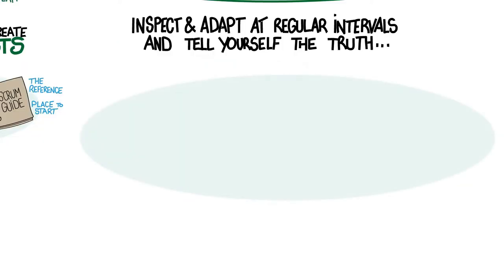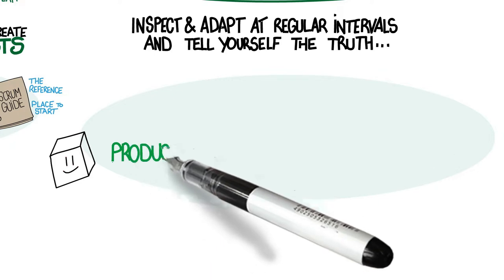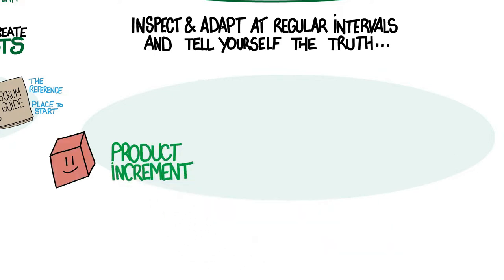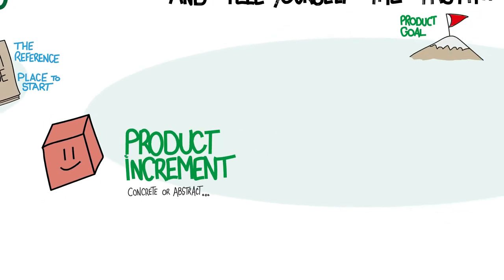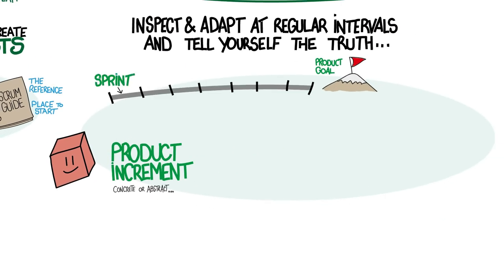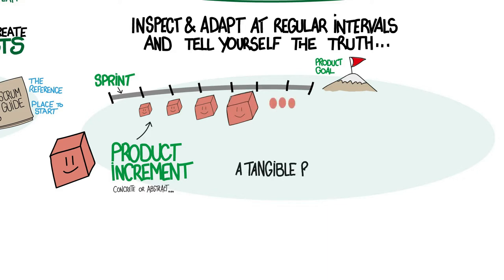Scrum was modeled on patterns of successful product development. The product might be something you put in a box, but it could also be something more abstract like a new store location or a process improvement for your company. Scrum works in short iterations called sprints. At least once per sprint the scrum team produces a new version of the product with a few new or upgraded elements. Scrum calls this the product increment.